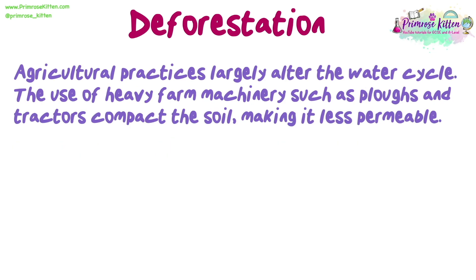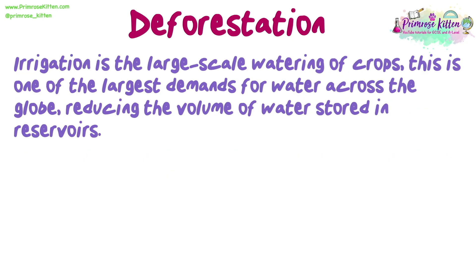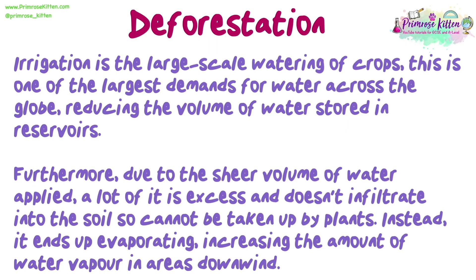Agricultural practices also largely alter the water cycle. The use of heavy farm machinery such as ploughs and tractors compacts the soil, making it less permeable. As a result, water infiltration decreases and surface runoff increases. This practice, as well as using chemical pesticides, can reduce the population of soil biota such as worms, which usually create tunnels and help infiltration. Irrigation is the large-scale watering of crops and is one of the largest demands for water across the globe, reducing the volume of water stored in reservoirs. Furthermore, due to the sheer volume of water applied, a lot of it is excess and doesn't infiltrate into the soil, so cannot be taken up by plants. Instead, it ends up evaporating, increasing the amount of water vapour in areas downwind.